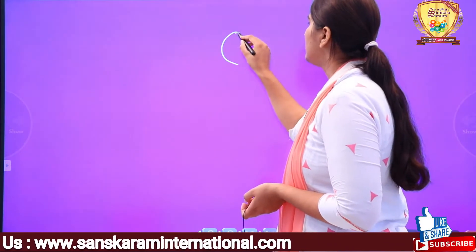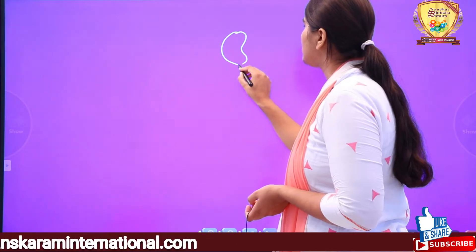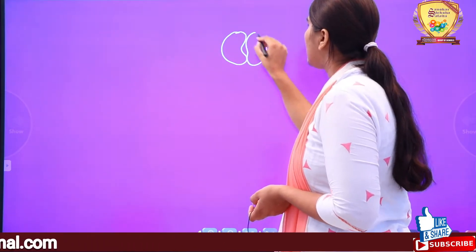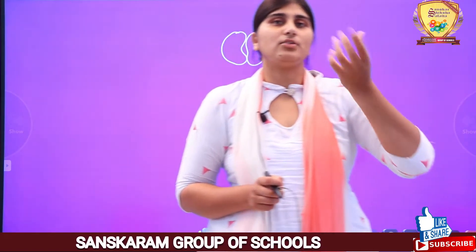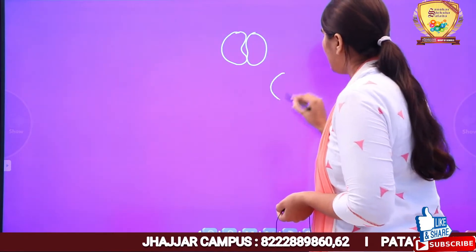क्या चीज़ है जिसकी वजह से stomata की opening और closing होती है? एक basic reason यह है कि guard cells के अंदर जब osmotic changes होते हैं — मतलब जब guard cell का turgor pressure बढ़ता या घटता है, यानि guard cell के अंदर water की entry हो रही है या बाहर जा रहा है — जिसकी वजह से guard cell swell up या shrink करती है, उसी की वजह से opening and closing of stomata होती है।